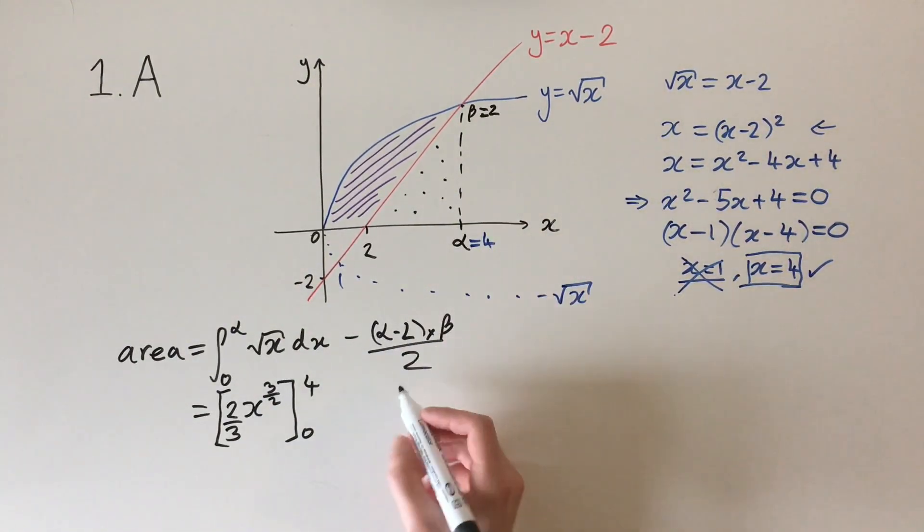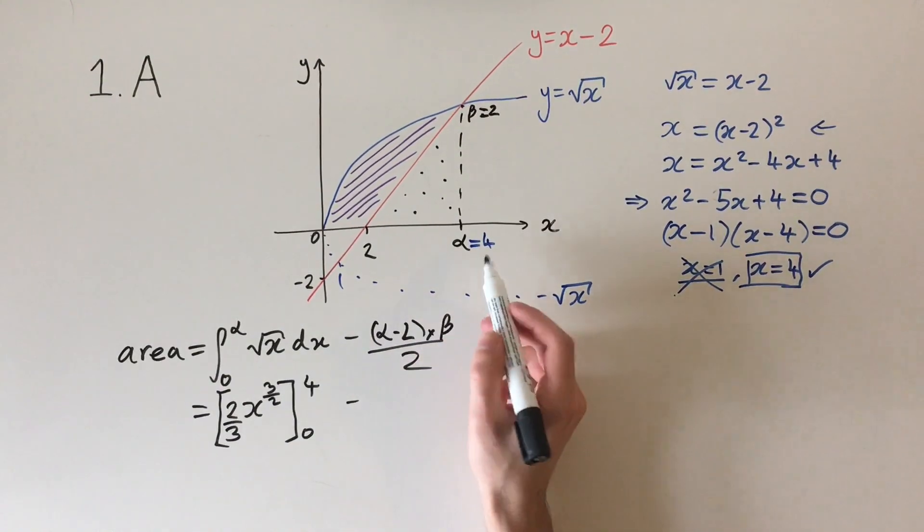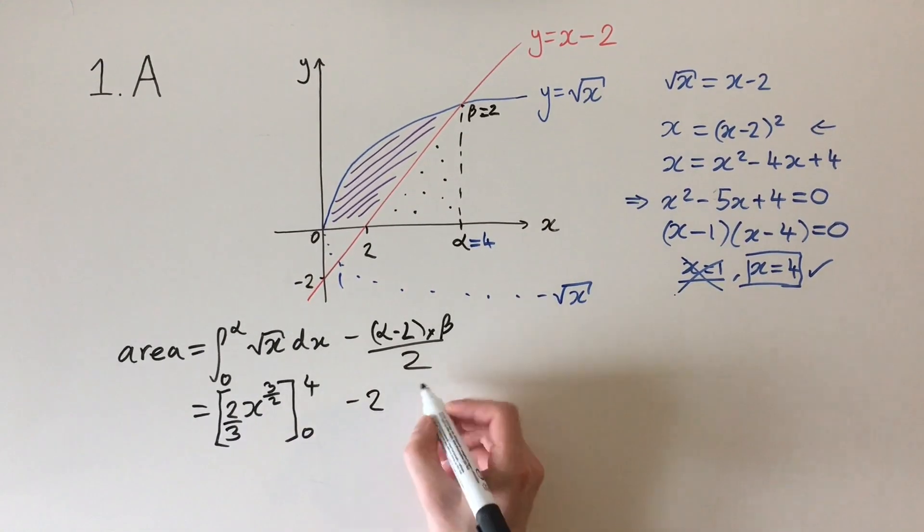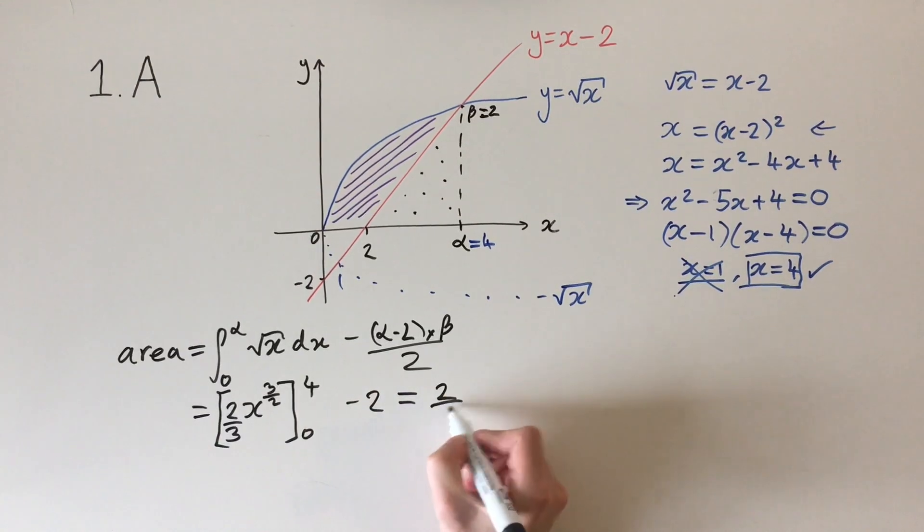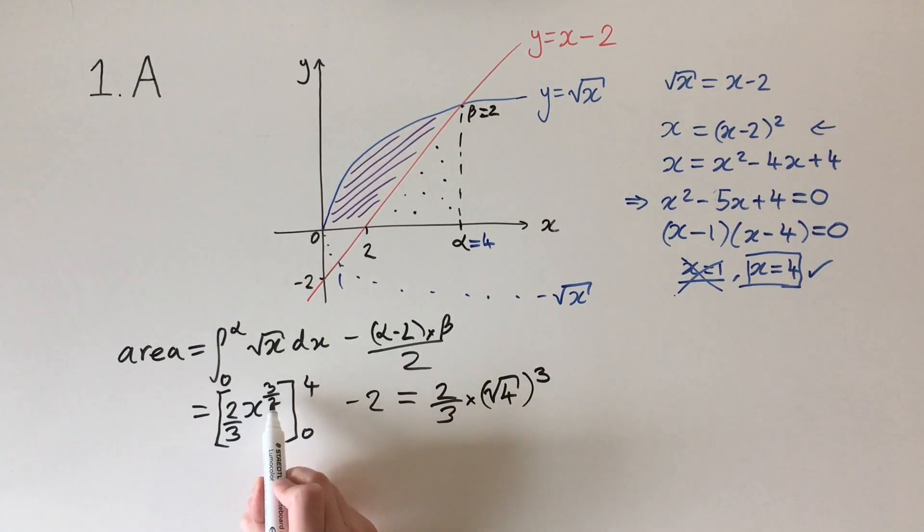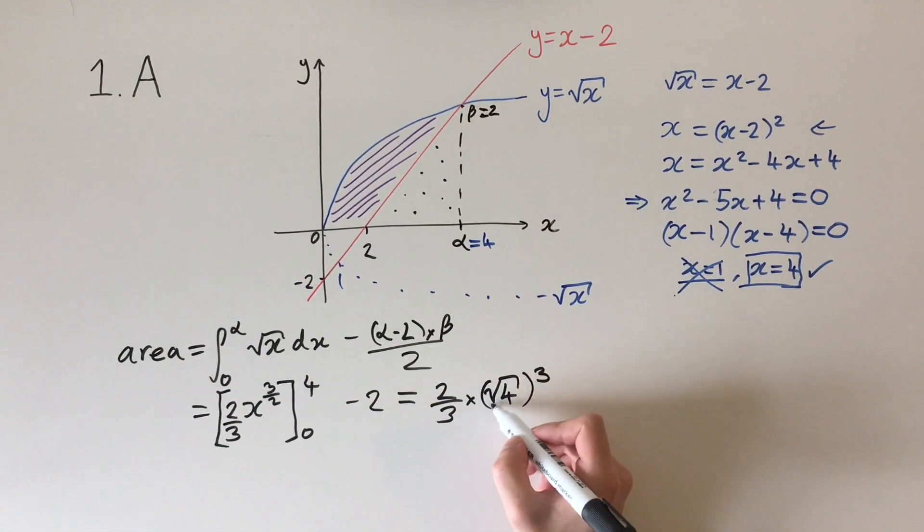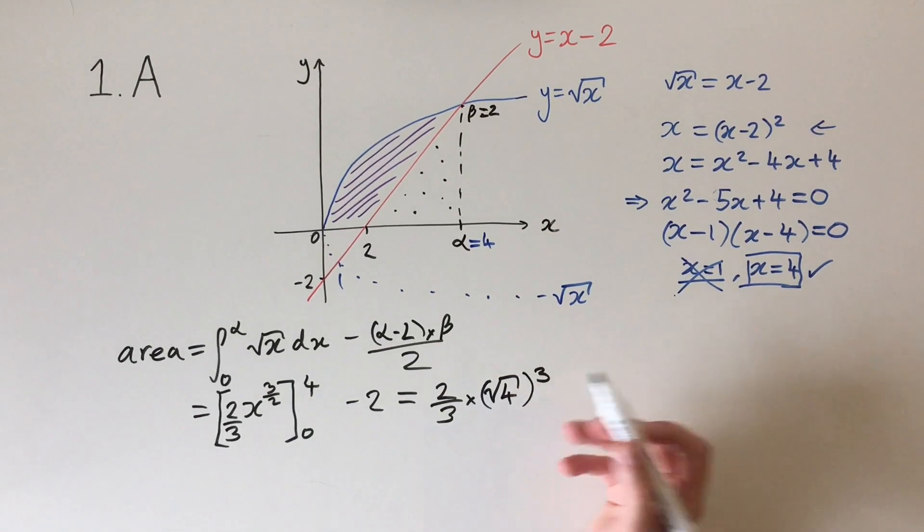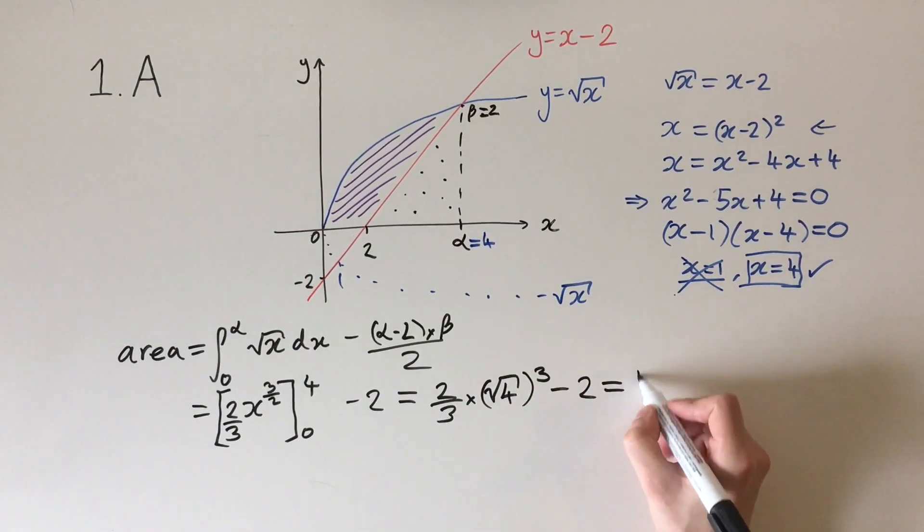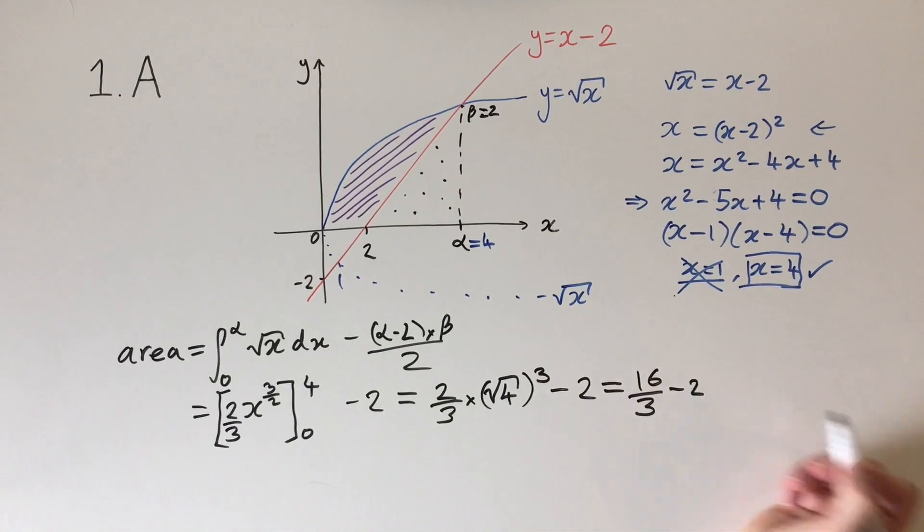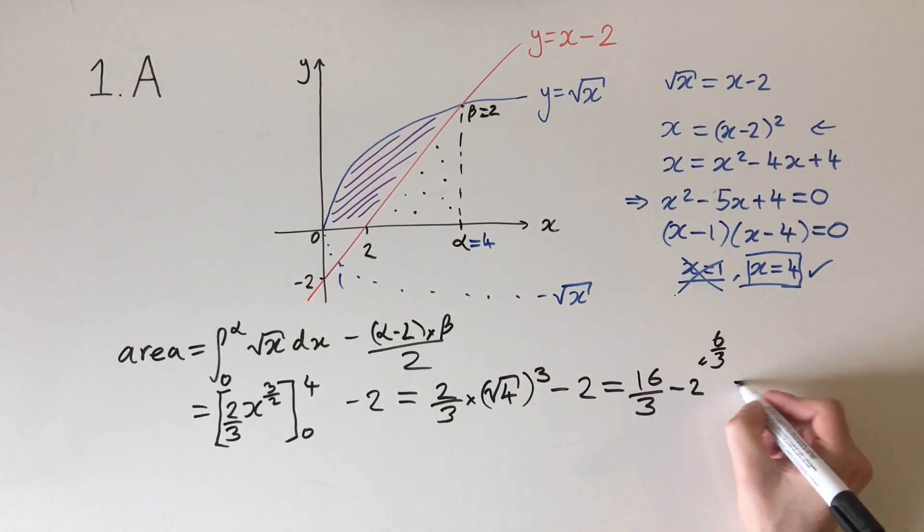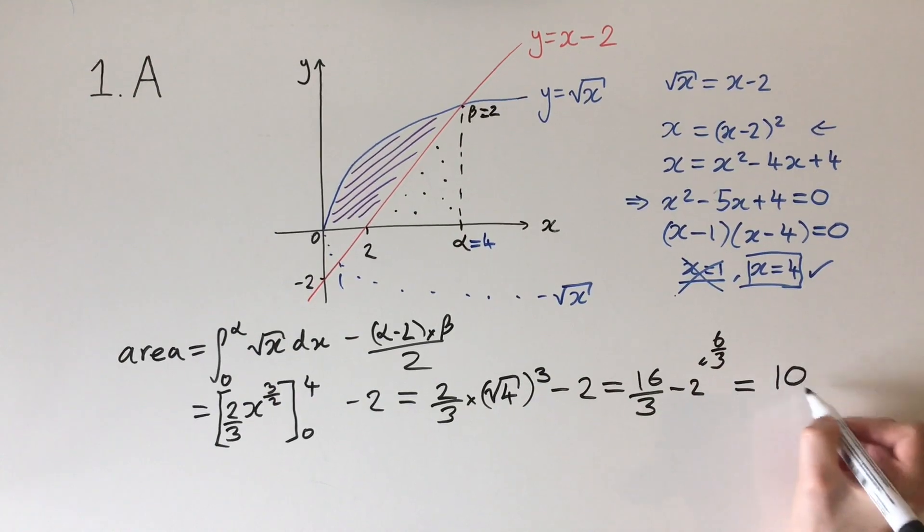Finally, this is the area of the triangle. We just put these values in: alpha minus 2 is 2, so 2 times 2 divided by 2 is just 2. Then putting these values in, 2 over 3 times the square root of 4 cubed—that's what 3 over 2 means—so square root of 4 is 2, and 2 cubed is 8. So we have 8 times 2 over 3, which is 16 over 3, minus 2. 2 equals 6 over 3, so the final answer is 10 over 3.